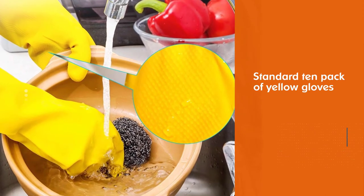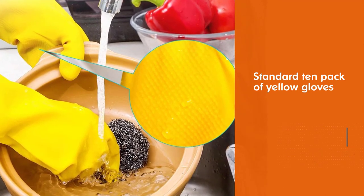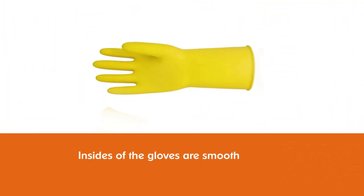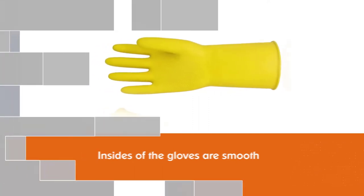standard 10-pack of yellow gloves. The insides of the gloves are smooth and they easily slide on and off the hands. Another nice design feature is the small lip on the sleeve which helps keep water from dripping down your arm.